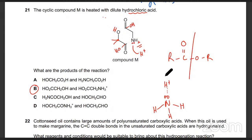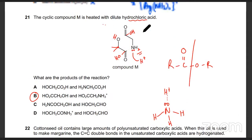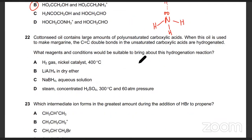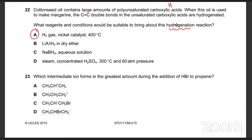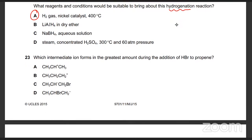Skipping the next question as part of it is no longer in the course. Cotton seed oil contains large amounts of polyunsaturated carboxylic acid. When this oil is used to make margarine, the C=C bonds in the unsaturated carboxylic acids are hydrogenated. The reagents and conditions: hydrogen plus nickel catalyst.